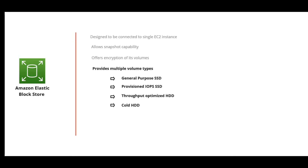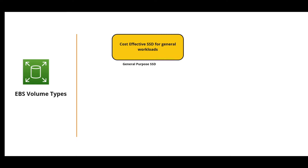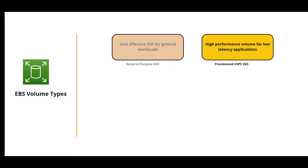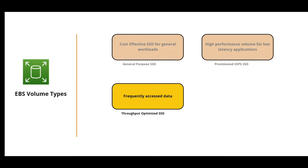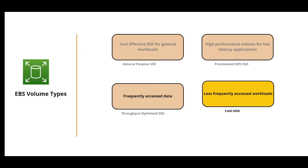EBS also provides multiple volume types: General Purpose SSDs, Provisioned IOPS SSDs, Throughput Optimized Hard Disk Drives, and Cold Hard Disk Drives. General Purpose SSD is the cost-effective default disk type for general workloads. For more intense workloads, Provisioned IOPS SSD offers high performance and low latency. Throughput Optimized HDD is for frequently accessed data, while Cold HDD is suited for less frequently accessed data.